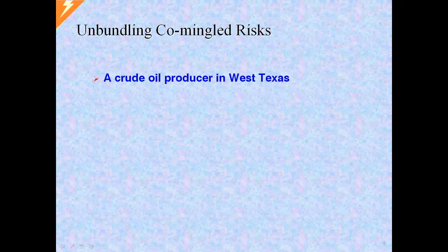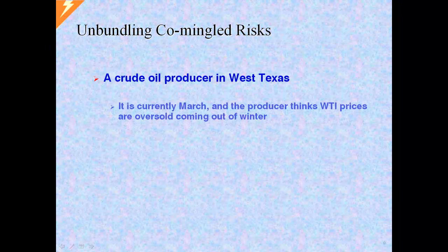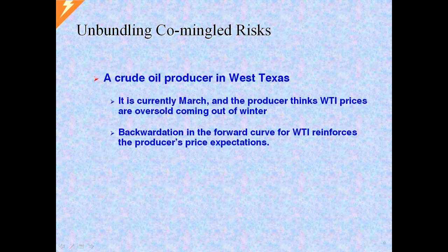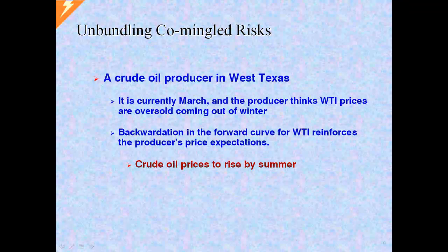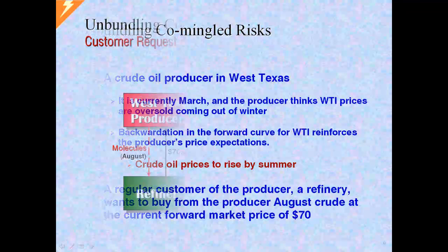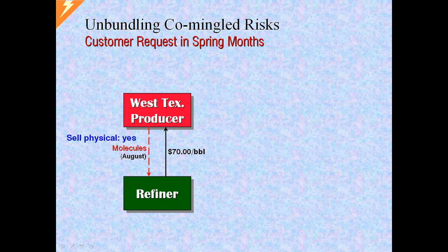Now let's consider the swap from another perspective. In this example, we have an exploration and production company out in West Texas. We're in the month of March, and the producer senses that WTI prices are too low given supply and demand conditions. A shift in the forward curve into backwardation tends to confirm its price forecast. Specifically, prices at WTI should rise by the time we get to summer. But things get complicated when one of the regular customers asks the producer to sell them August Crude, which currently trades at $70. Here is the producer's dilemma: first and foremost, he wants to meet a customer's need. He also has no problem committing his August Crude production and very much would like to place his physical.